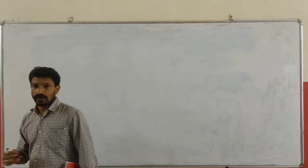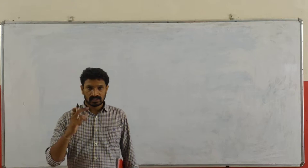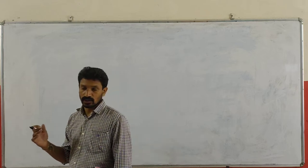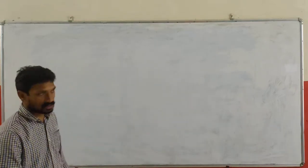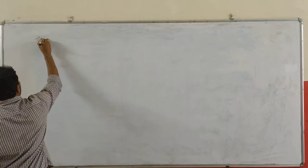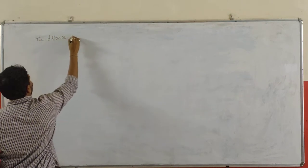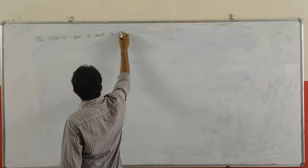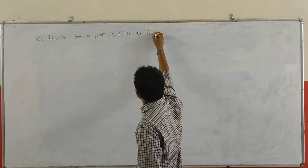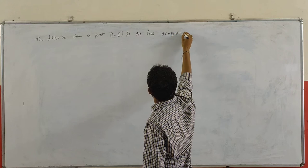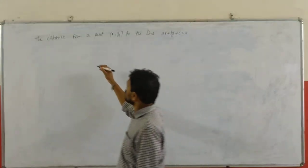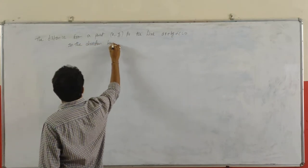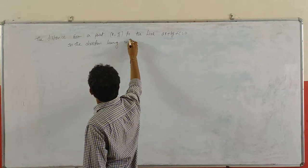Good morning all of you. Now we are going to discuss the distance from a point P(x1, y1) to the straight line Ax + By + C = 0, in the direction having inclination theta.